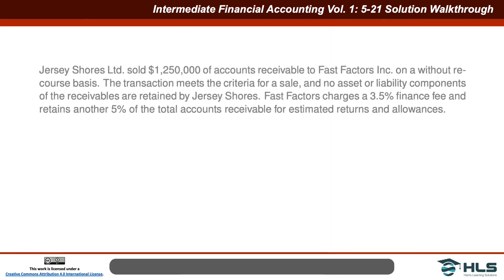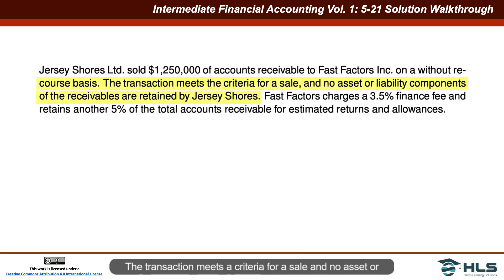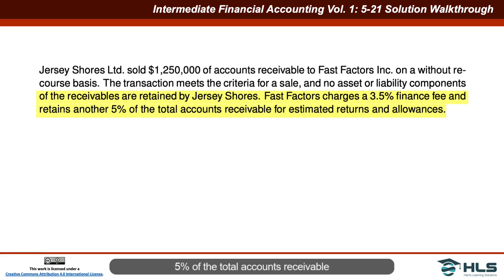Here's the data for our problem. Jersey Shore's sold $1,250,000 of accounts receivable to Fast Factors on a without recourse basis. The transaction meets the criteria for a sale and no asset or liability components of the receivables are retained by Jersey Shore's. Fast Factors charges a 3.5% finance fee and retains another 5% of the total accounts receivable for estimated returns and allowances.